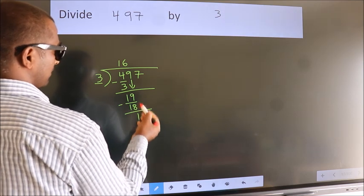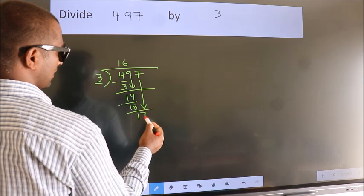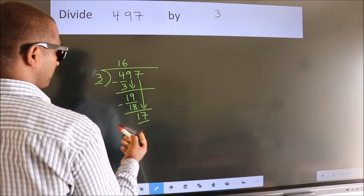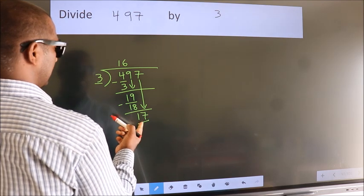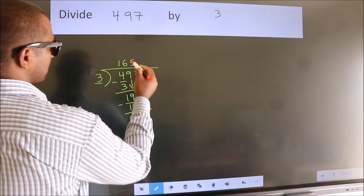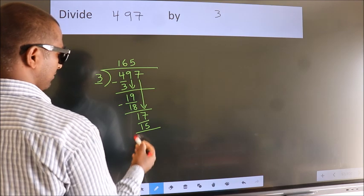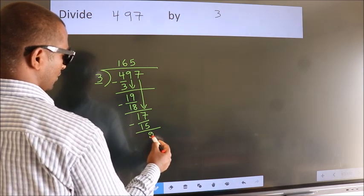After this, bring down the beside number. So 7 down. So 17. A number close to 17 in 3 table is 3, 5, 15. Now we subtract. We get 2.